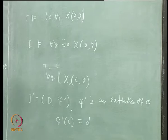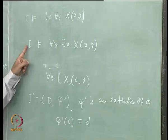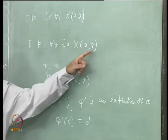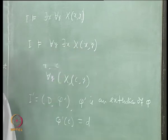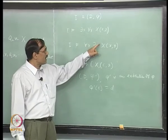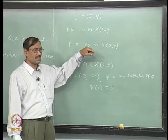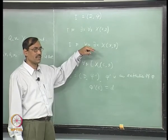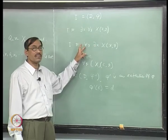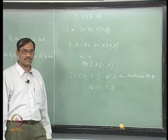Now let us consider the second case. What happens for ∀y∃x, φ(x,y)? This says that the x which we will get from the domain corresponding to that element might be depending on the values of y.